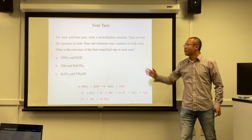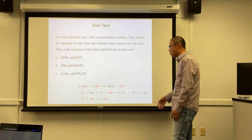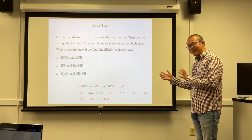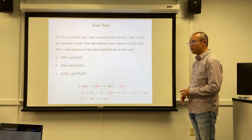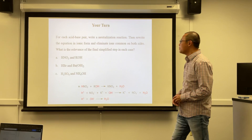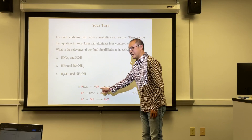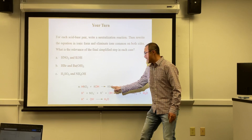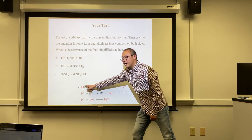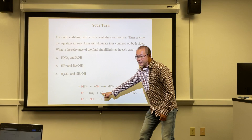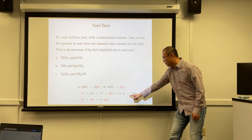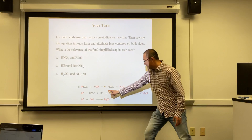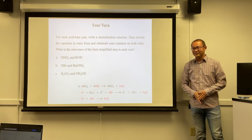Example A: KOH + HNO3. One proton and one hydroxide gives a 1:1 ratio. Products are water and KNO3 (potassium nitrate). Breaking into ions: HNO3 → H+ + NO3−; KOH → K+ + OH−; KNO3 → K+ + NO3−. Cancel K+ and NO3− to get the net ionic: H+ + OH− → H2O.